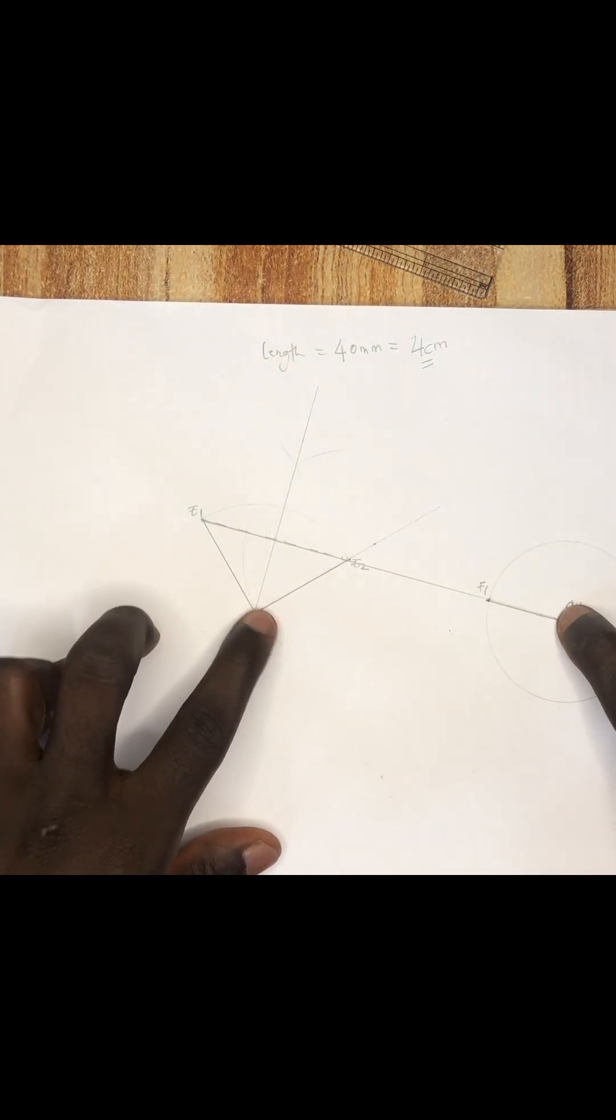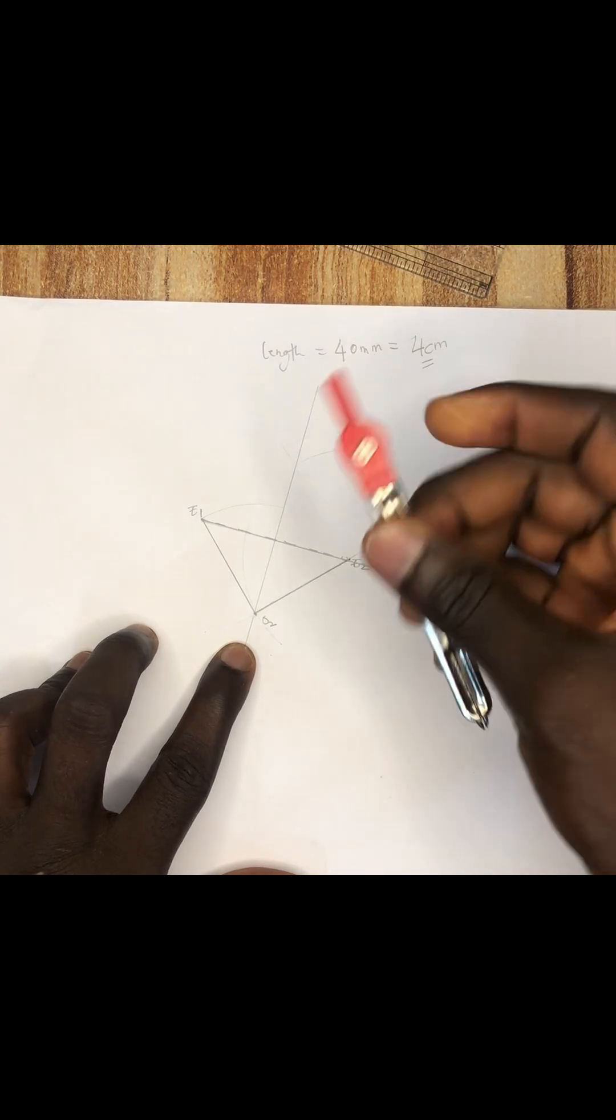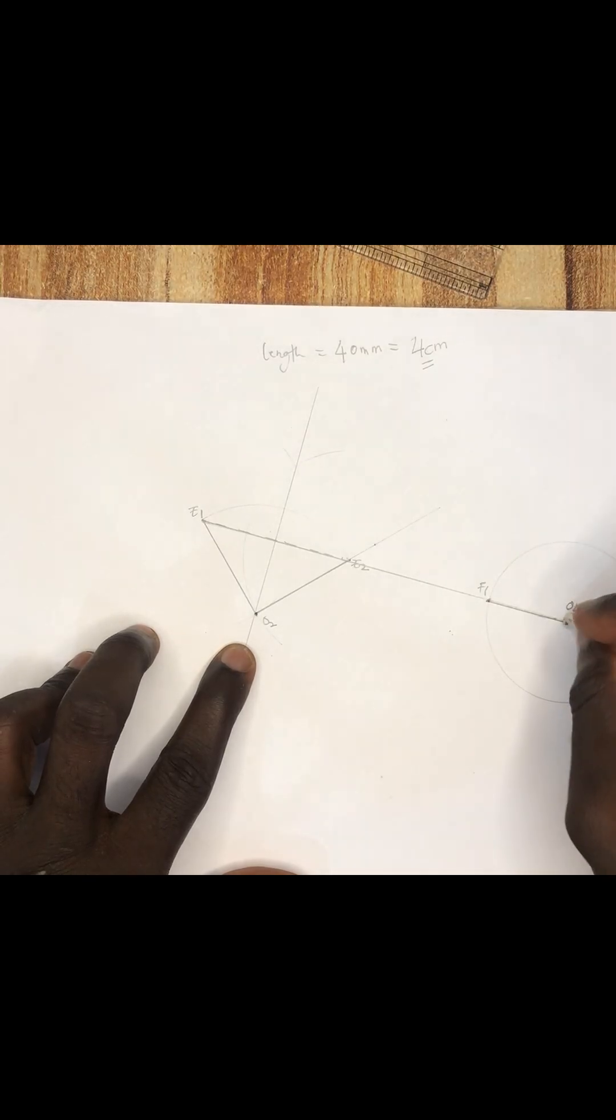So I will locate my fixed points. These are ground points. I will locate them on the board with my compass or the divider. I have this, then I have this.